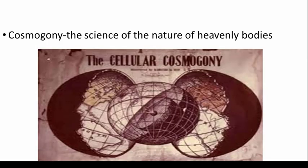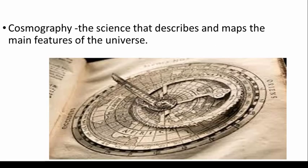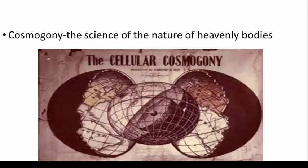Cosmogony is the science of the nature of heavenly bodies. Cosmography is the science that describes and maps the main features of the universe. Cosmology is the science of the nature, origin, and history of the universe. 'Cosmo' means heavenly bodies — bodies that are out of earth or in spatial areas. You can make out other words easily: 'graphy' means it will be geographic mapping, 'chrono' means time-related nature.